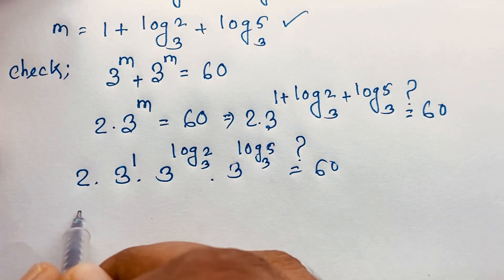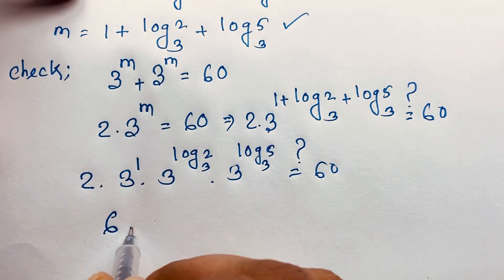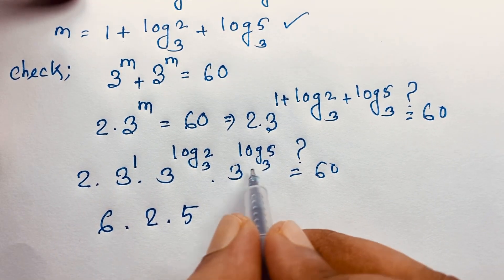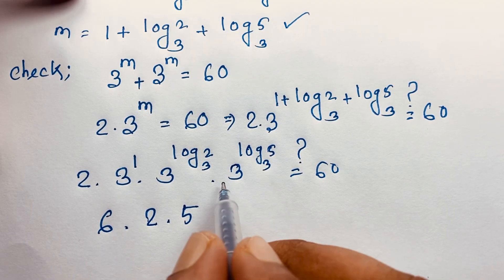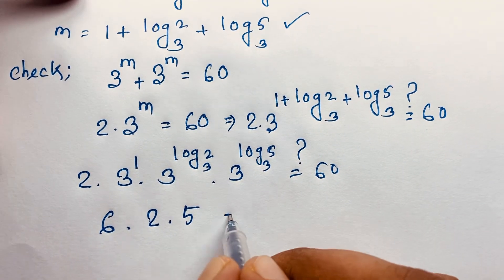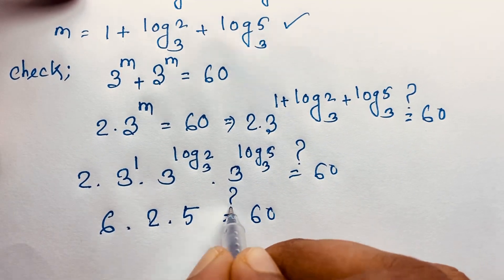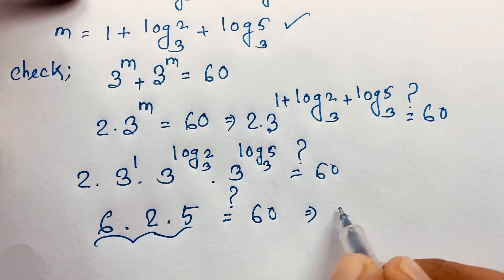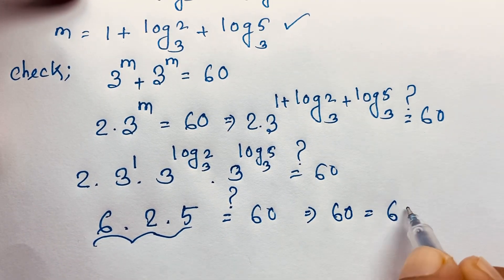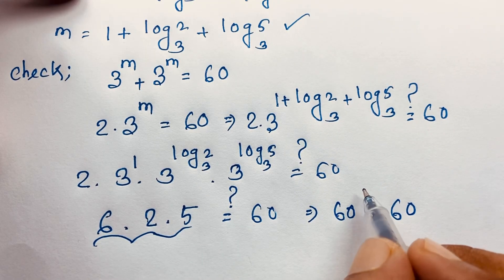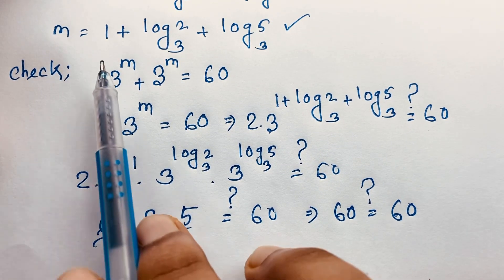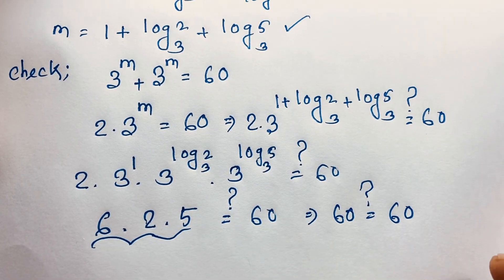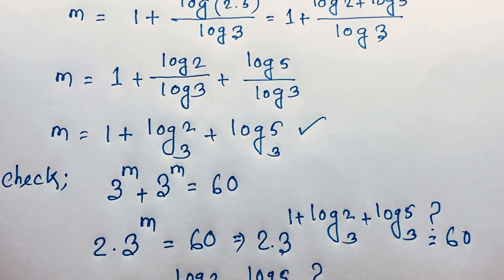Simplifying: 2 times 3 gives 6, and 3 to the power log 2 base 3 equals 2, and 3 to the power log 5 base 3 equals 5, since the base and log base are the same. So we get 2 times 3 times 2 times 5, which is 2 times 30 equals 60. Left-hand side equals right-hand side, confirming m equals 1 plus log 2 base 3 plus log 5 base 3.